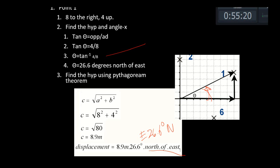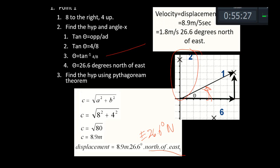Now we also want velocity. The velocity is 8.9 meters in five seconds — just plug it into your calculator — that gives 1.8 meters per second, in the same direction: 26.3 degrees north of east.